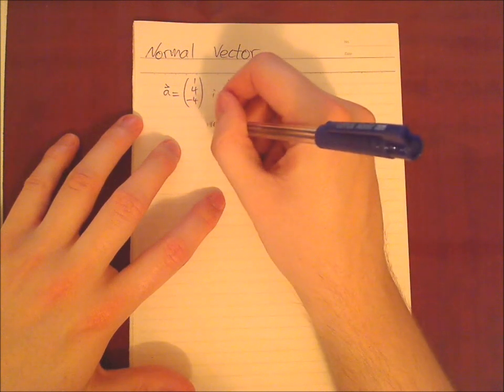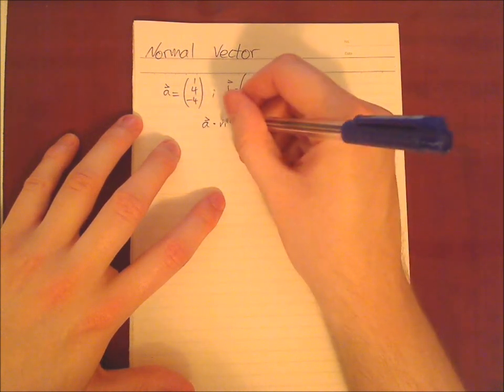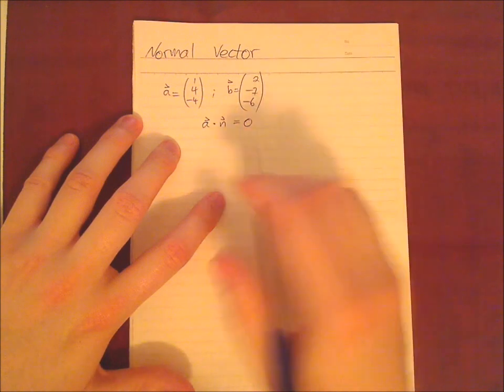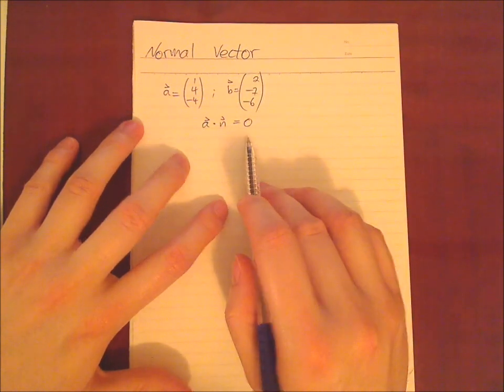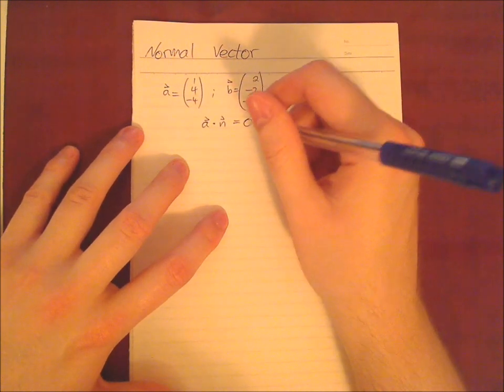So by definition it is called n the normal vector and when we multiply the normal vector with a and with b you will see in a second that it should result in 0. That's the definition.